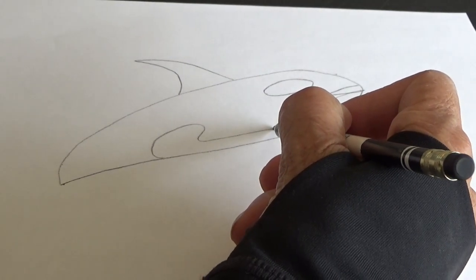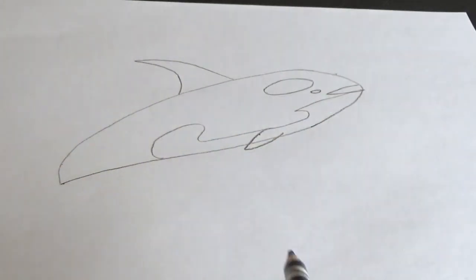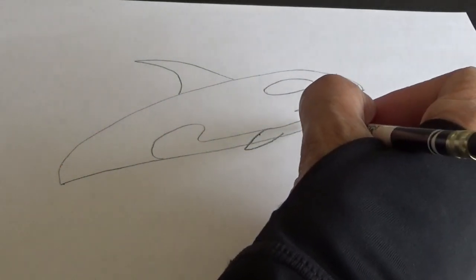Right here, down below, we are going to draw two side fins, and these fins are like arms for the whale.